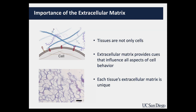It's really important when thinking about trying to heal damaged tissue that we consider not only the cell component but also the extracellular matrix component. As a biomaterials lab, we try to design materials that can mimic or replace the extracellular matrix and promote endogenous healing. One other thing to point out is that the extracellular matrix is quite specific to each tissue.